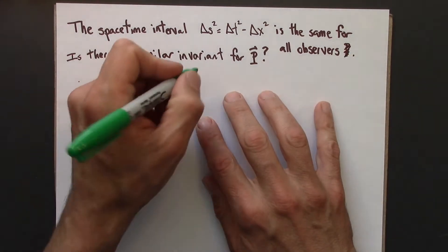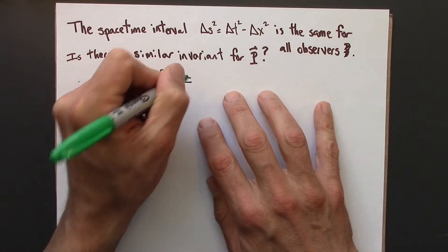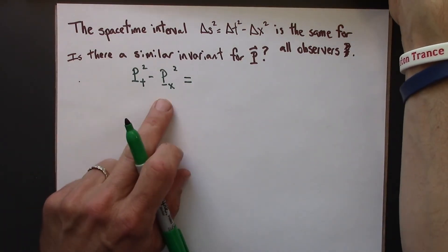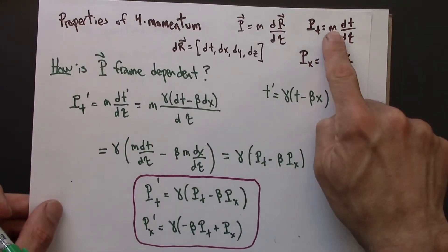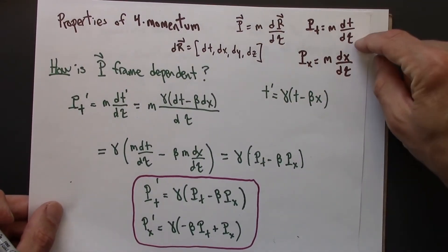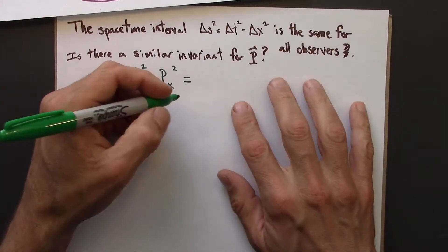So the first thing I'm going to do, and this will be a couple steps of algebra, but nothing crazy, is I'm going to plug in expressions for pt and px. So m dt/dtau, dx/dtau. So let's do that.